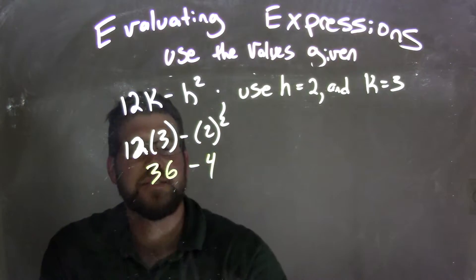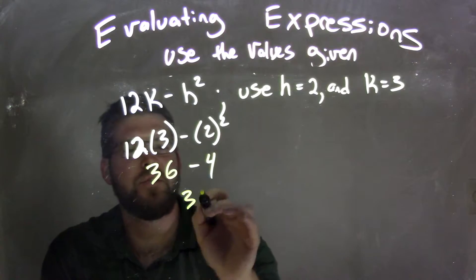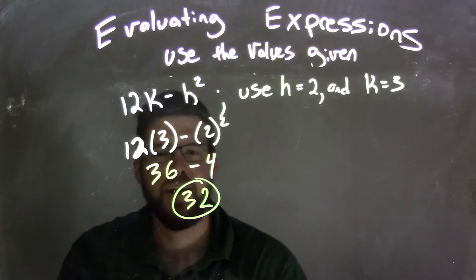So now we have 36 minus 4 to be left, and 36 minus 4 is 32, and that is my final answer.